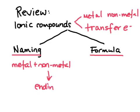In naming ionic compounds, you name the metal first, then you name the non-metal. On the non-metal, you drop the ending and add -IDE. So examples would be like lithium oxide, sodium chloride, magnesium phosphide.